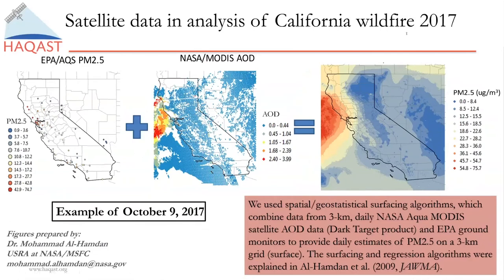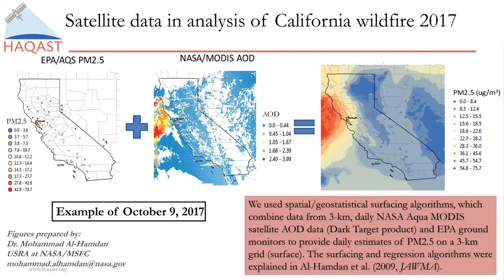Now moving on to some of our Tiger Team analysis. During the wildfire Tiger Team project, we focused on the wildfire in California during 2017. One of our goals was to see whether we can combine the satellite data and the ground monitor data to create a wider spatial coverage for PM2.5 on the surface. On the very left-hand side, you see the EPA AQS PM2.5 at all monitor locations. Even though California has more monitor coverage compared to many other states, you can see this is really not a perfect way to tell every county and community how they are exposed to PM2.5.